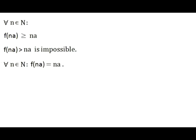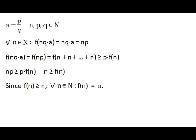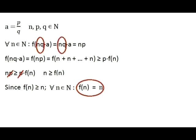This is the key discovery. Proving F of X equals X for any positive rational is now almost trivial. Represent A as a fraction with natural numbers P and Q. If N is any natural number, then NQ is also natural, so F of NQ times A equals NQ times A, which equals NP. On the other hand, F of NP is not less than P times F of N from condition 2, so NP is not less than P times F of N, giving N is not less than F of N. Combined with the earlier result that F of N is not less than N, we conclude that for any natural N, F of N equals N.